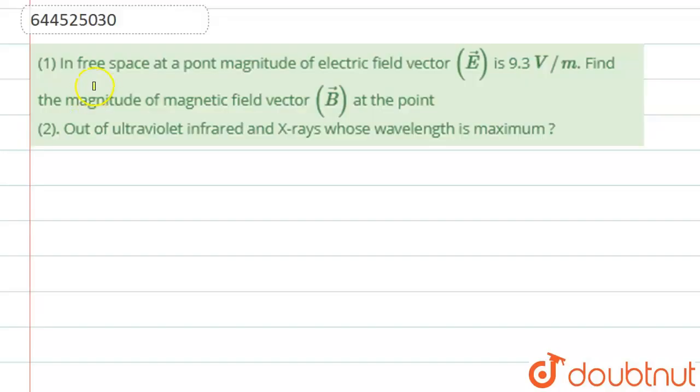Students, now we are going to see this question. The question says that in free space at a point, the magnitude of the electric field vector is 9.3 volts per meter. Find the magnitude of magnetic field vector at that point. Out of ultraviolet, infrared and X-rays, whose wavelength is maximum?